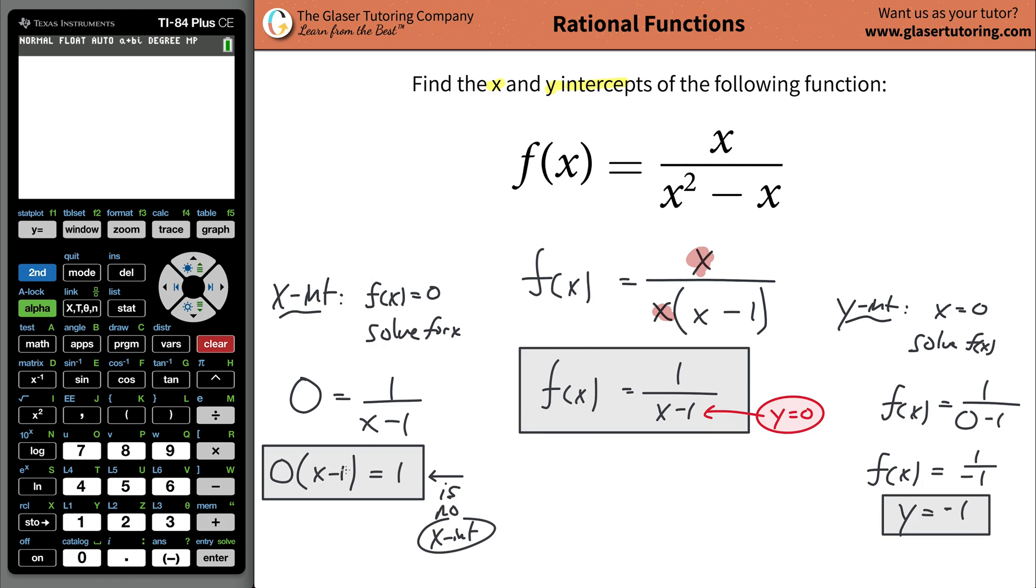So the x intercept, there is none. And the y intercept now, you're going to have the coordinates, remember all y intercepts always have the coordinate of 0 for x. That's why I plugged in 0 here in the function, comma negative 1. Now what we can do is we can graph this thing and see what happens.